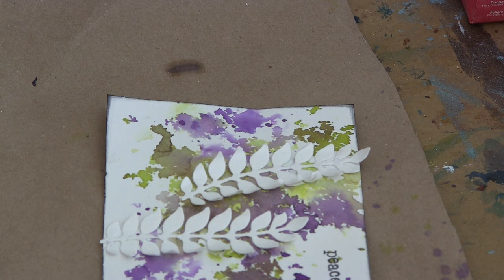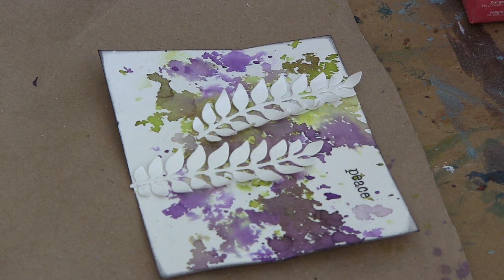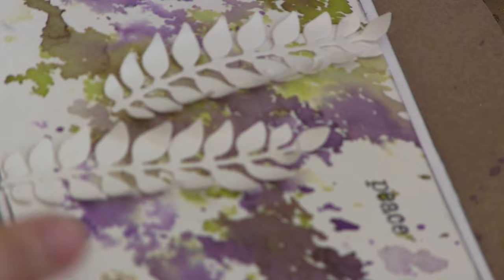And the nice thing about this very thin stem is you can sort of curve it. So I'm going to put this white card front on a white card base. So what I often like to do just to help it pop off the page just a little bit more is to rim the edges with some black Distress Ink.